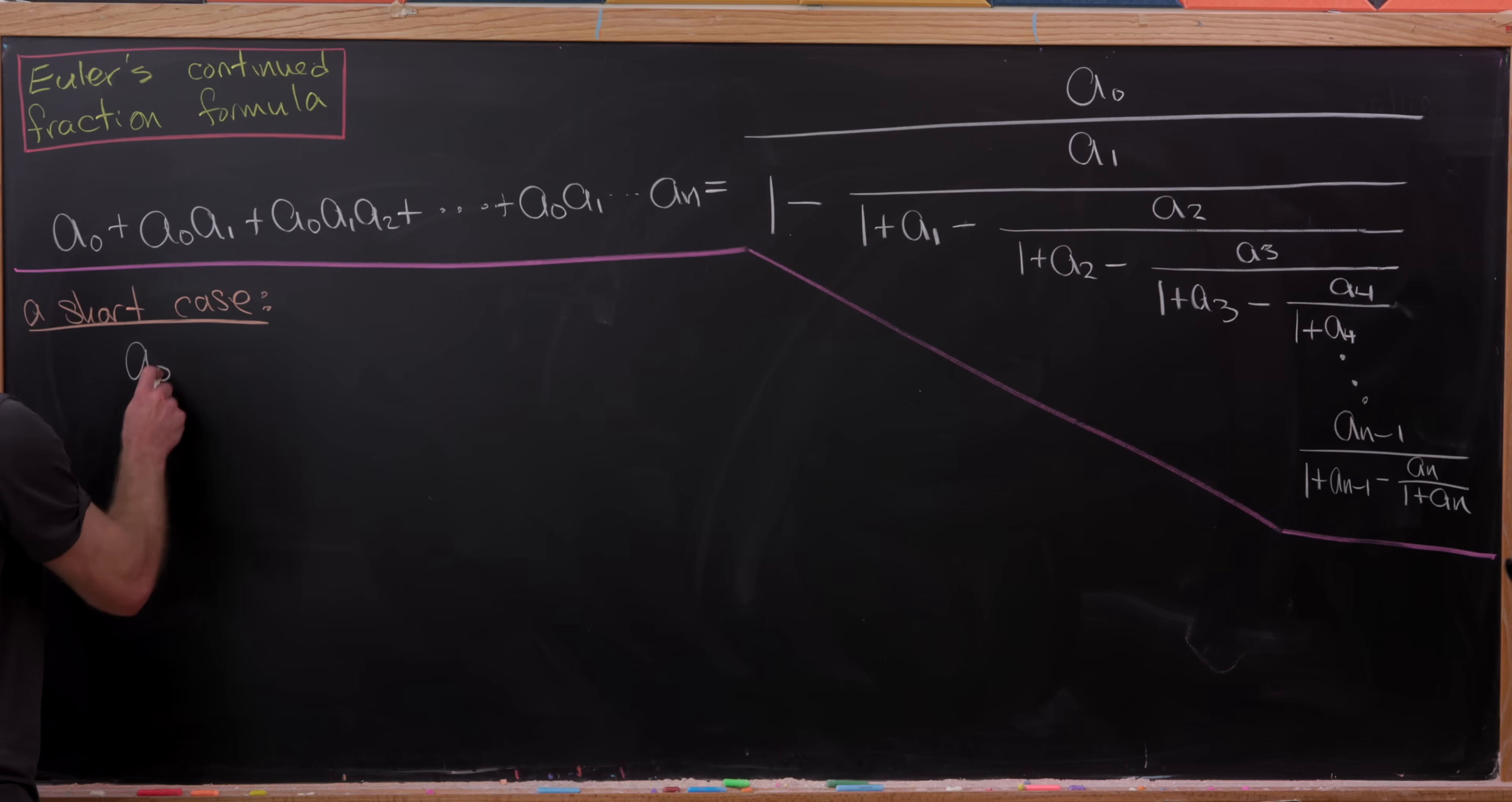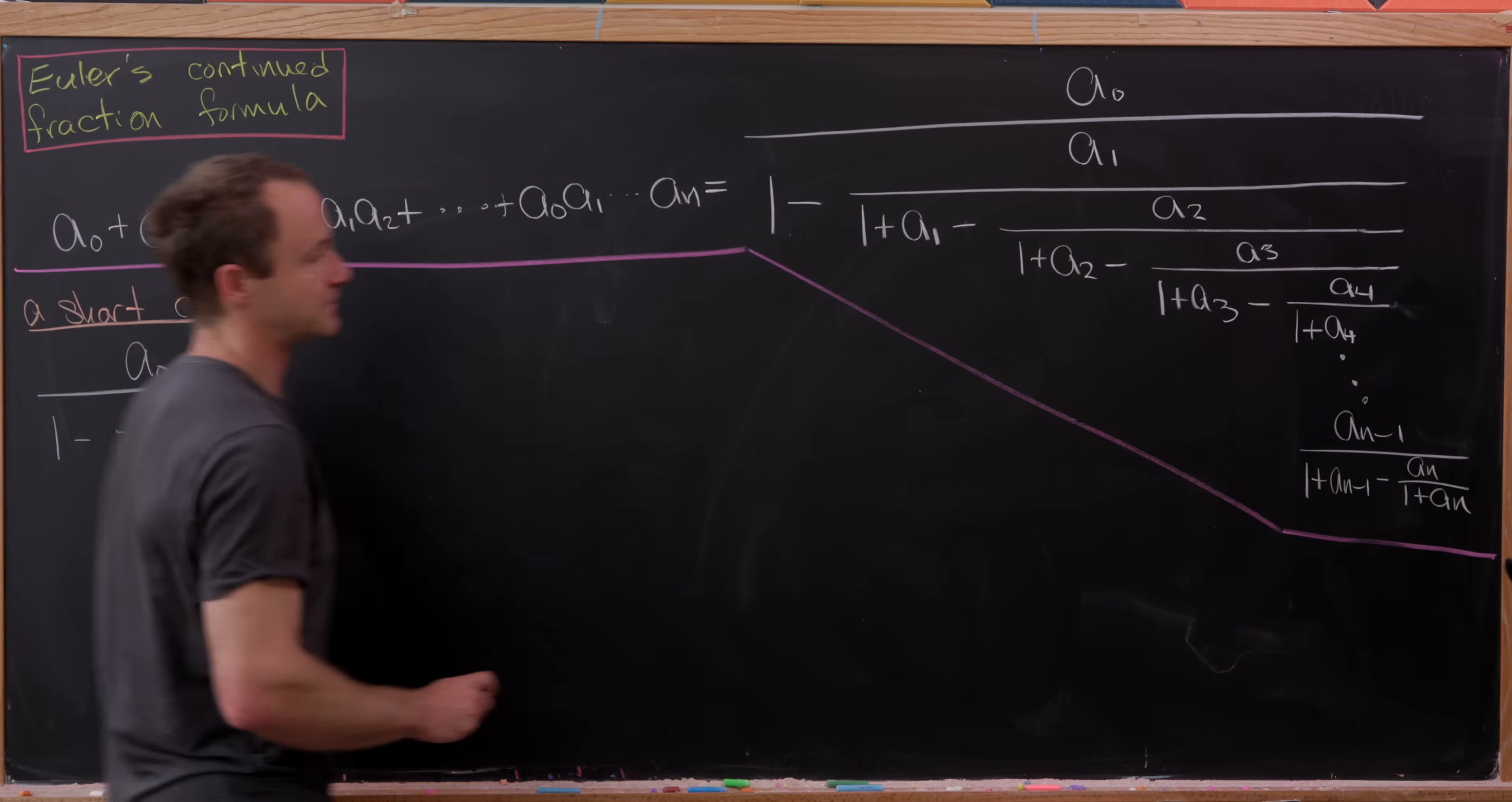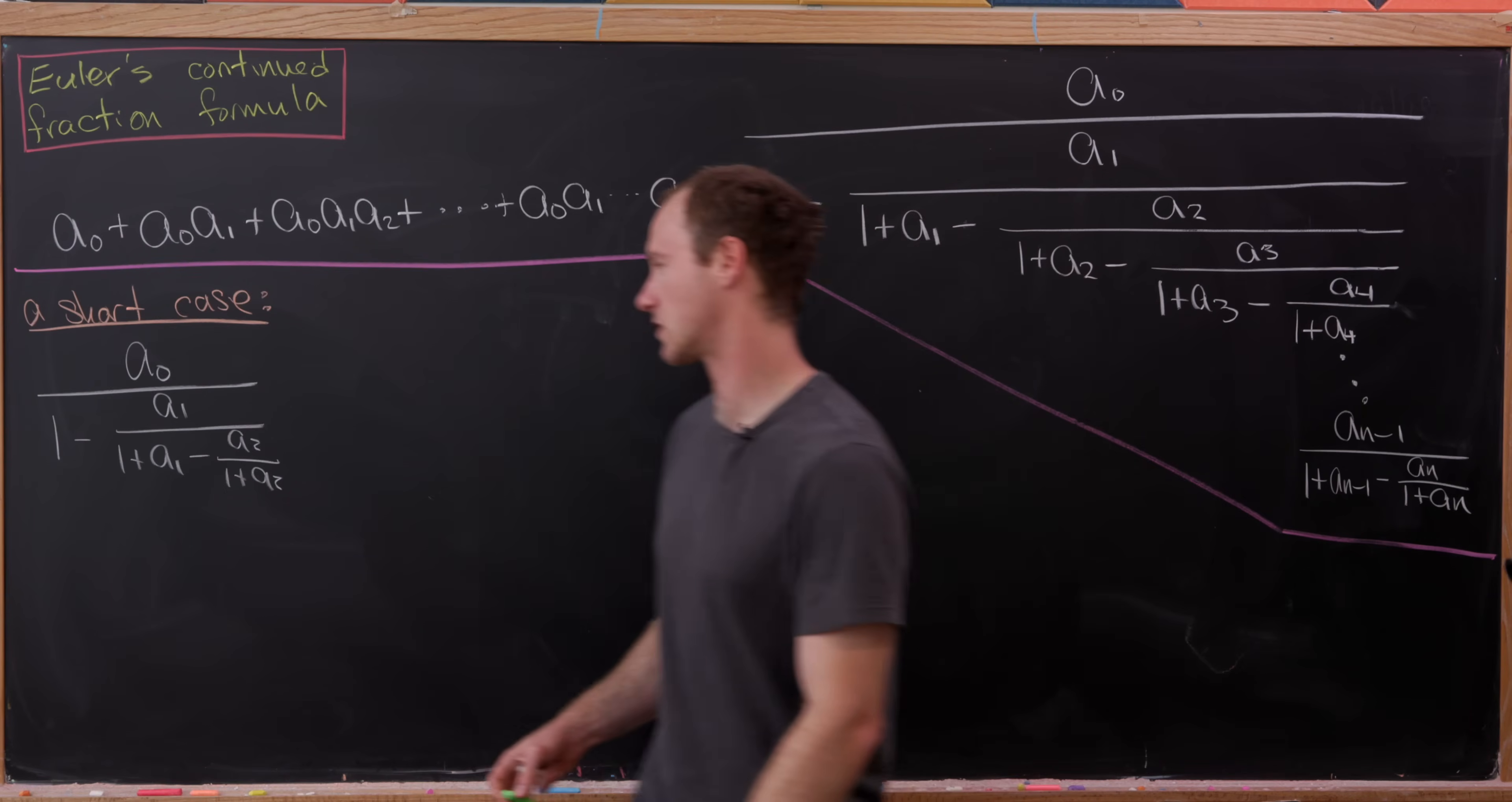So here we'll have a0 over, let's see, it'll be 1 minus a1 over 1 plus a1 minus a2 over 1 plus a2. So we've got something like that. And now let's simplify that just a little bit at a time until we hopefully get these first three terms.